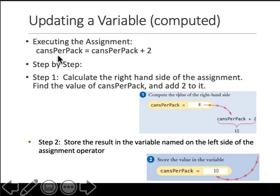So what should happen is cansPerPack equals, go to that memory location, retrieve the value of 8, add 2 to it, it becomes 10, and then put that in the memory location for this variable. So it will calculate it, put it in the same place for that variable. That's what happens inside the compiler. But we can write something like this provided cansPerPack is already defined up here somewhere in the code.